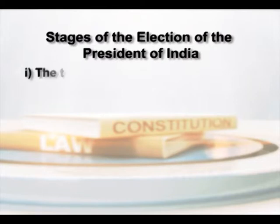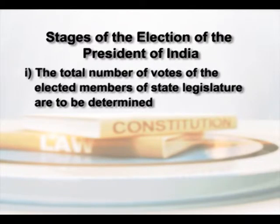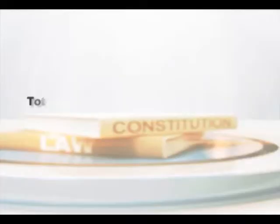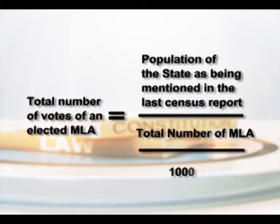Now let us see how the method of election actually works. Professor J.C. Johari, while describing the method of election of the President, has cited several stages. At the very first stage, the total number of votes of the elected members of the state legislature are to be determined. All elected members of the state legislature have a single vote to cast, but the value of their vote is not equal — it is determined by a formula: total votes of an elected MLA equals the population of the state as mentioned in the last census report, divided by total number of elected MLAs, which is further divided by 1000.